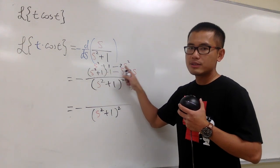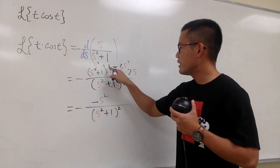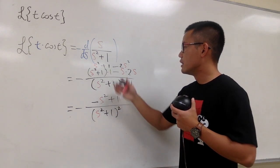s squared minus 2s squared all together is negative s squared, and then we have this plus 1.